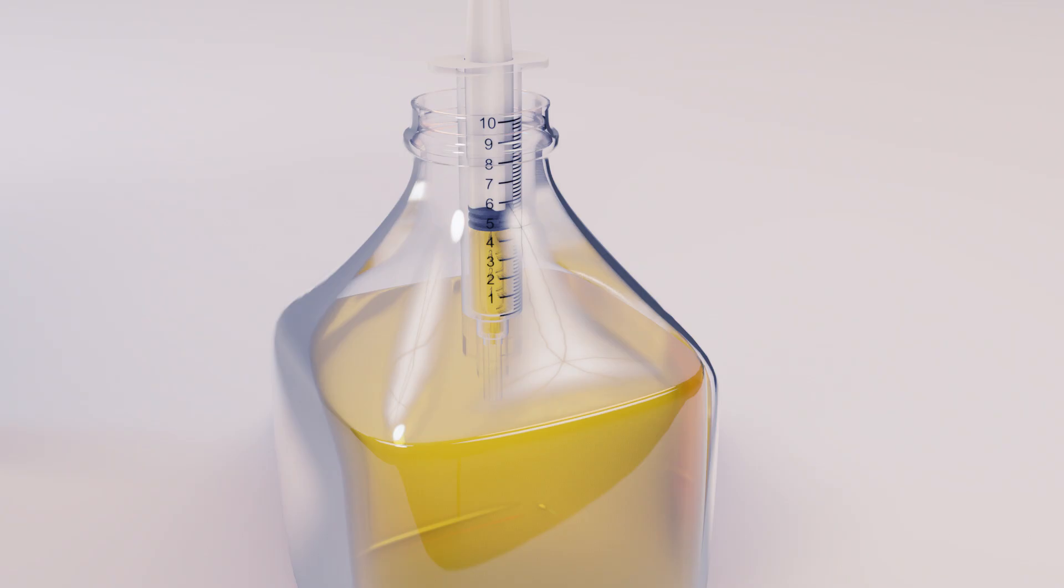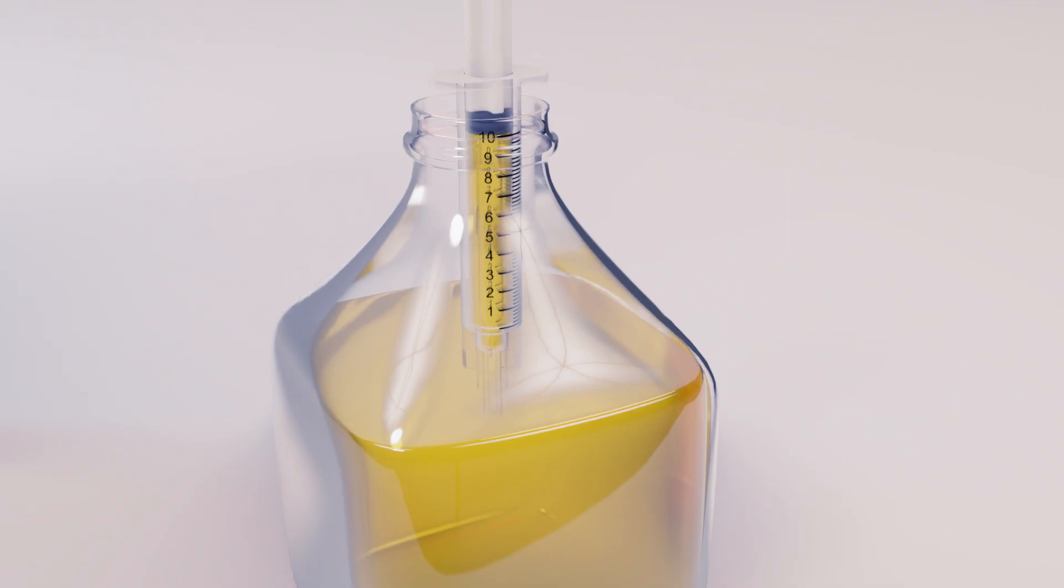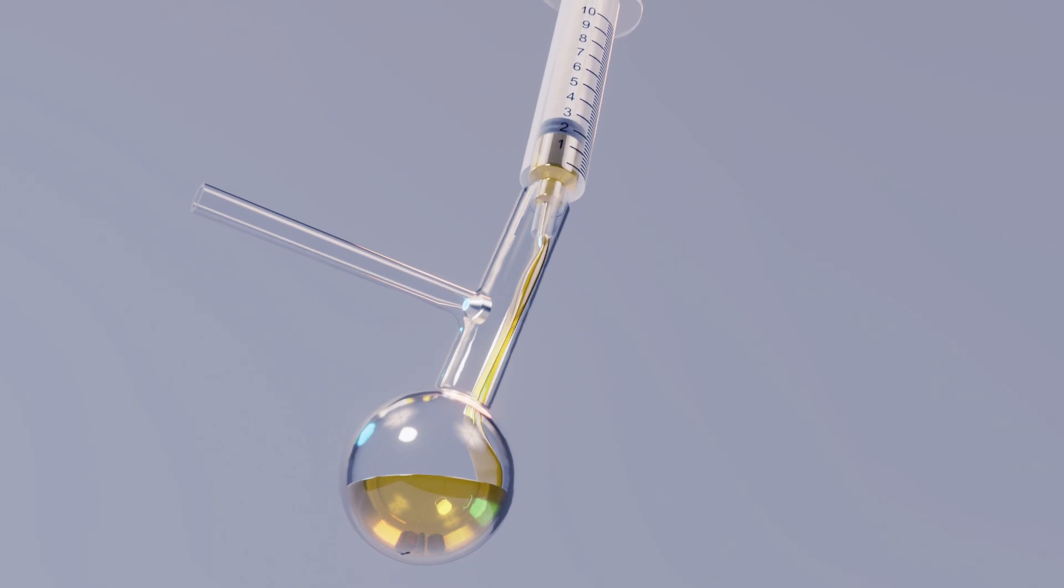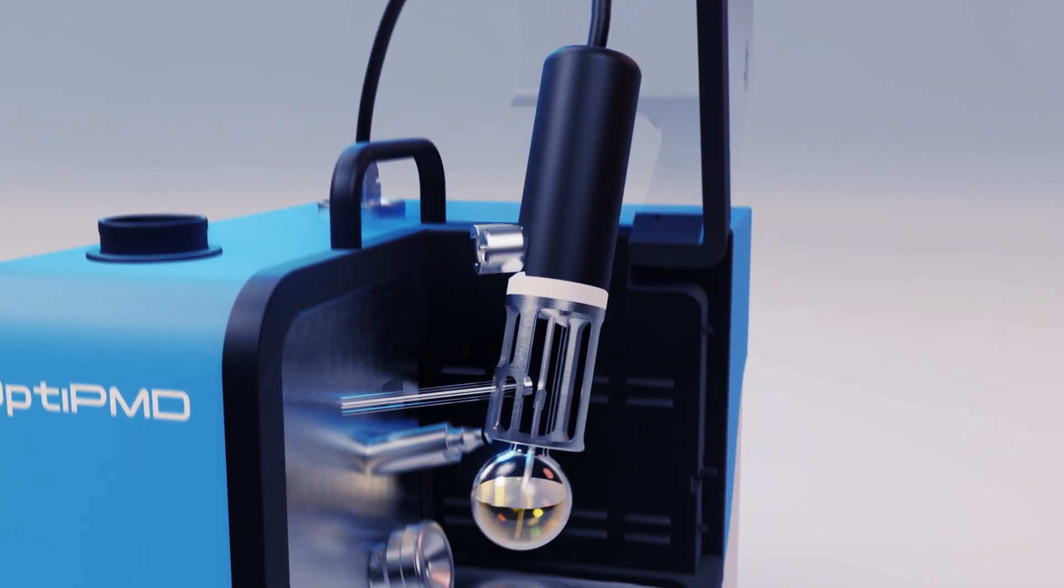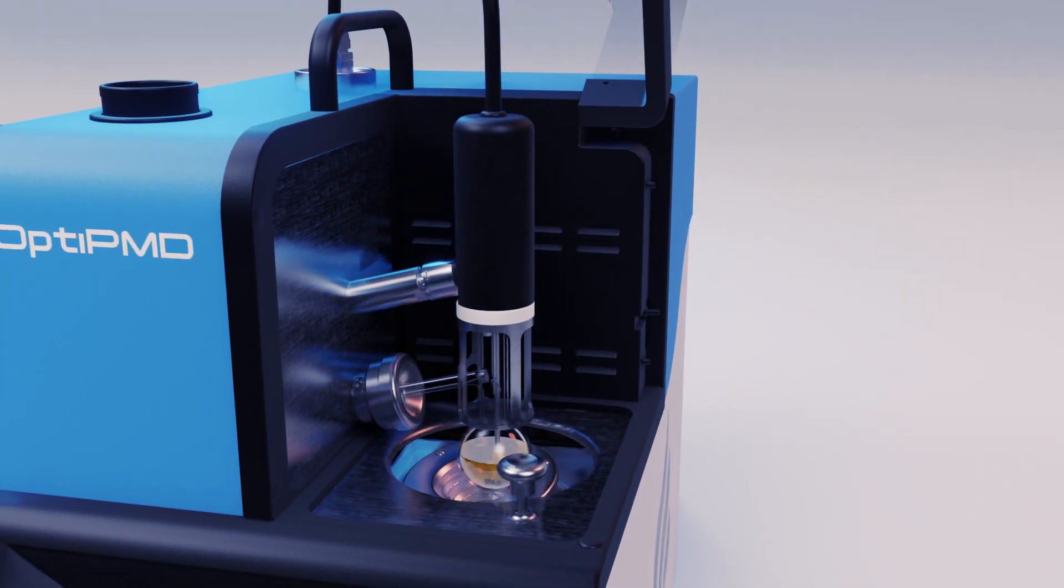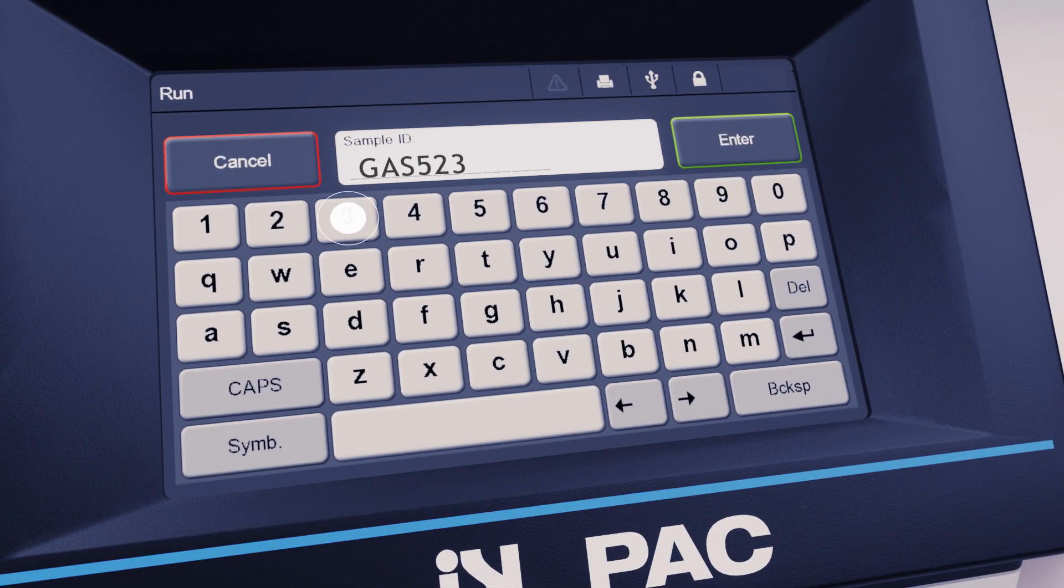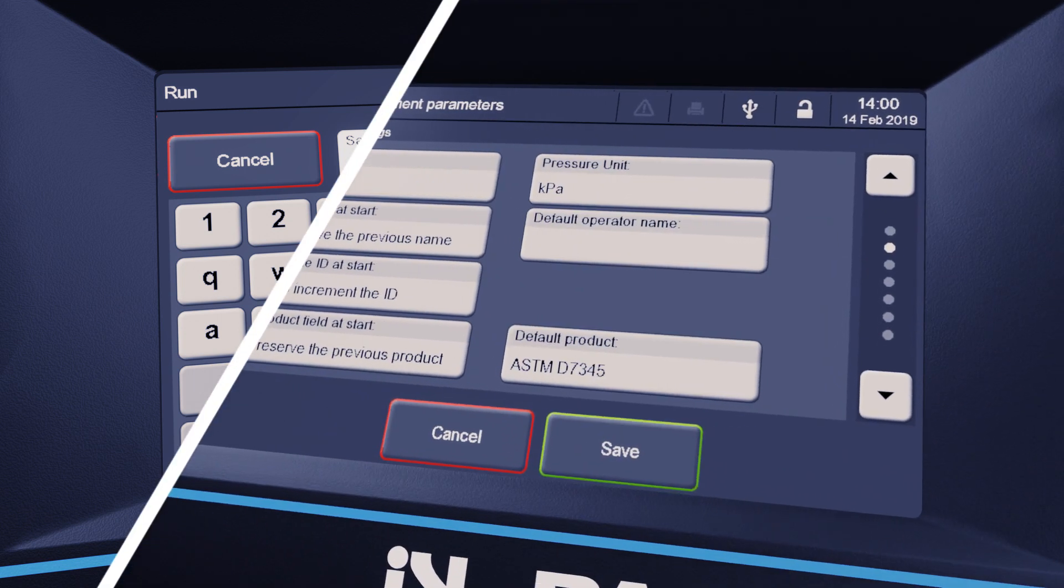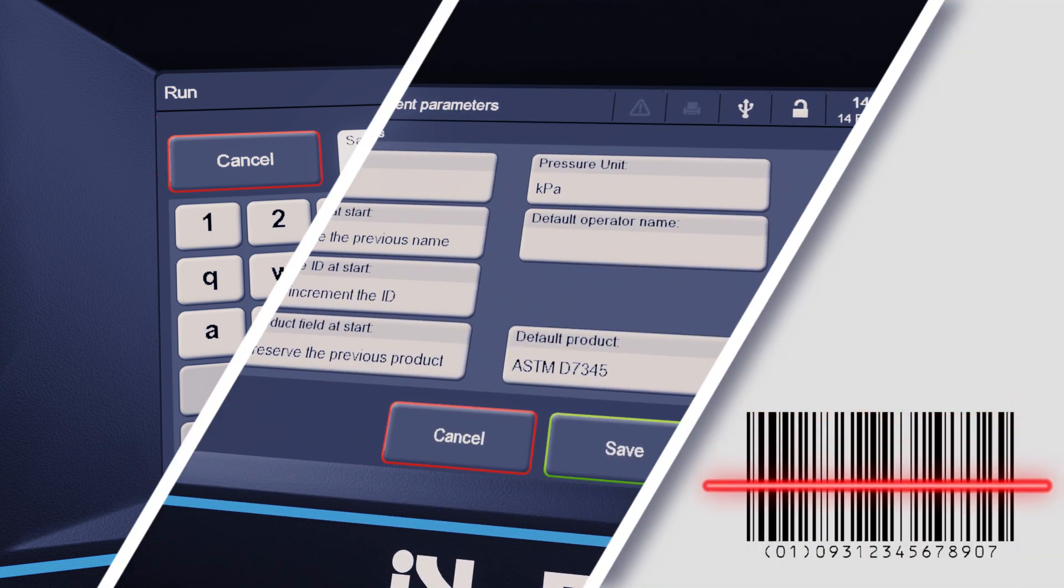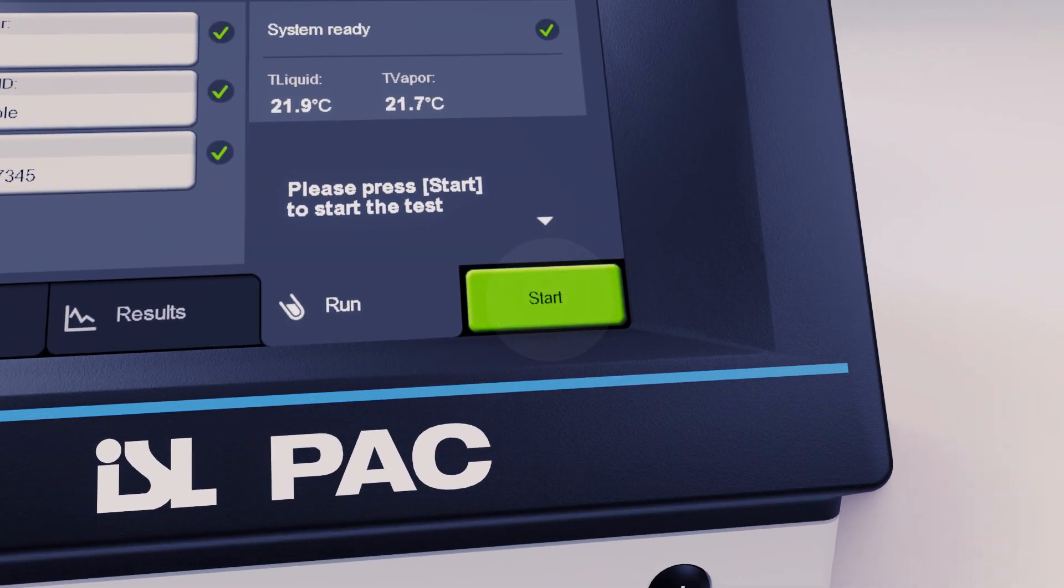Simply prepare the sample and load it into the analyzer. Enter a sample ID, select it from the preloaded options, or scan it with the barcode reader. Press start to run the sample.